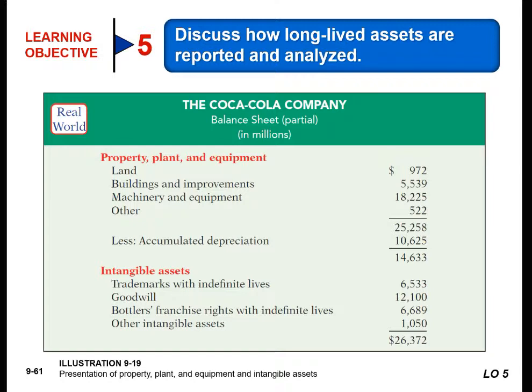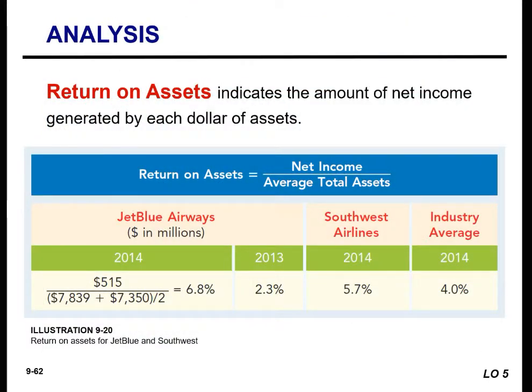In addition to the major classes and the accumulated depreciation associated with them, the depreciation and amortization methods being used should be described, and the amounts and expense for those periods disclosed. Now that we can see how it looks on a balance sheet, let's talk about some of the things that analysis can tell us. The presentation of financial information about plant assets enables different decision makers to analyze the company's use of its plant assets.